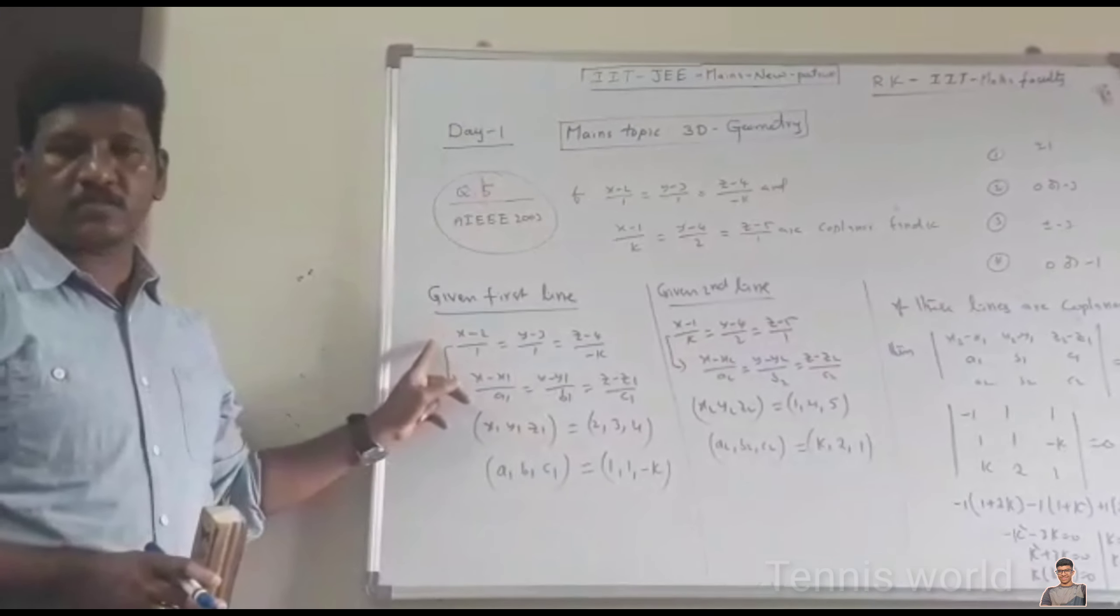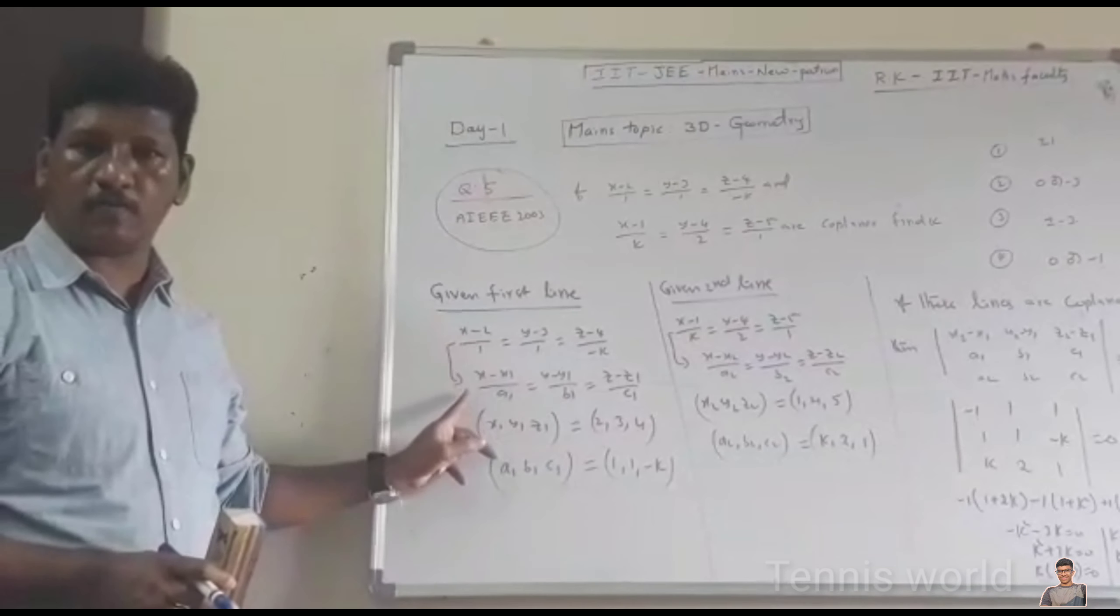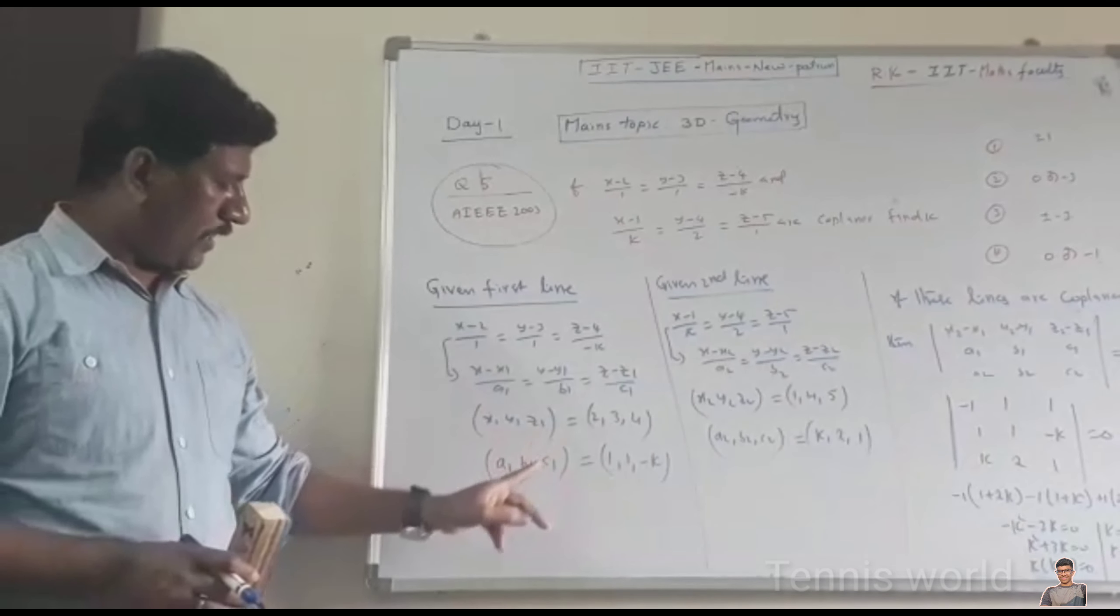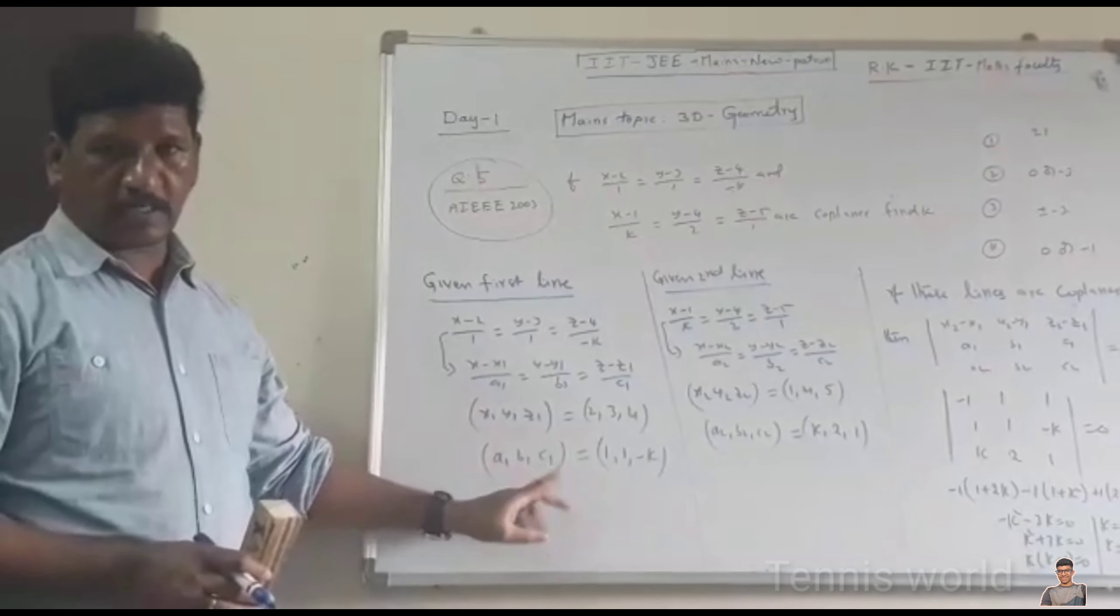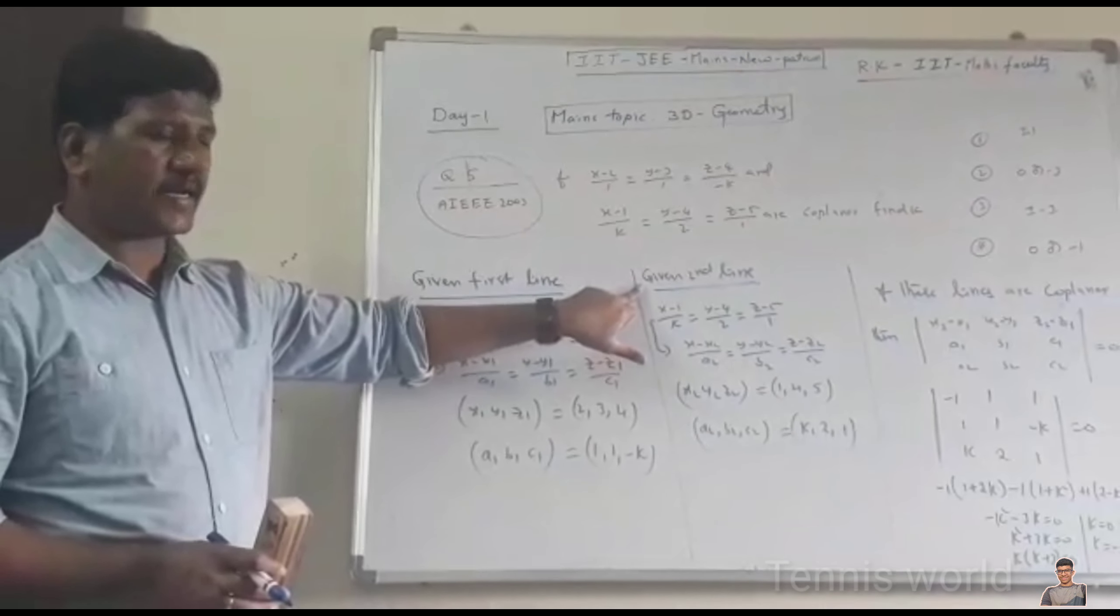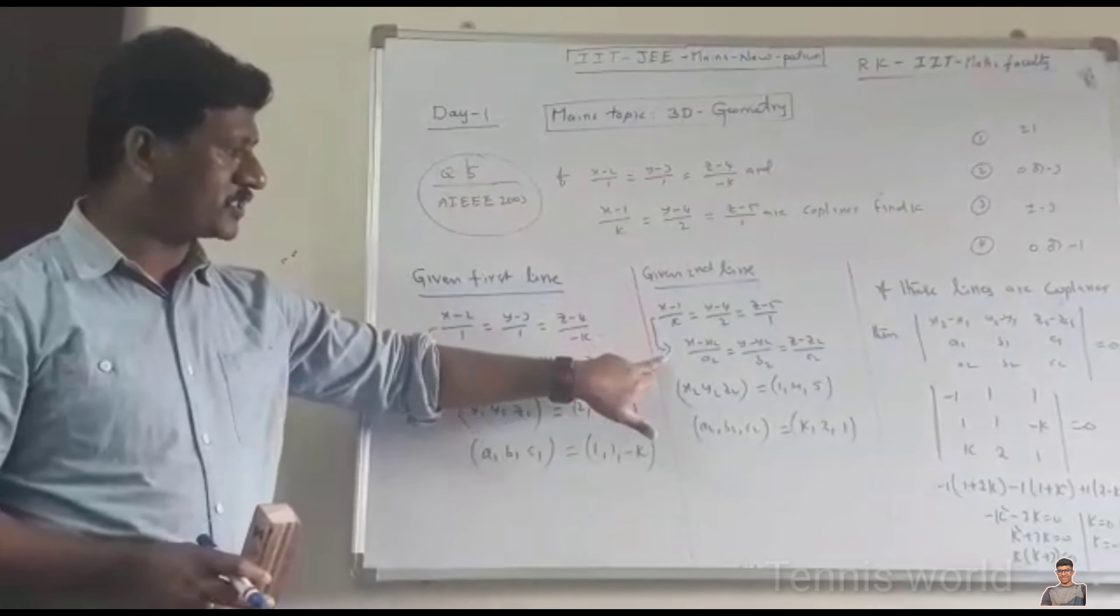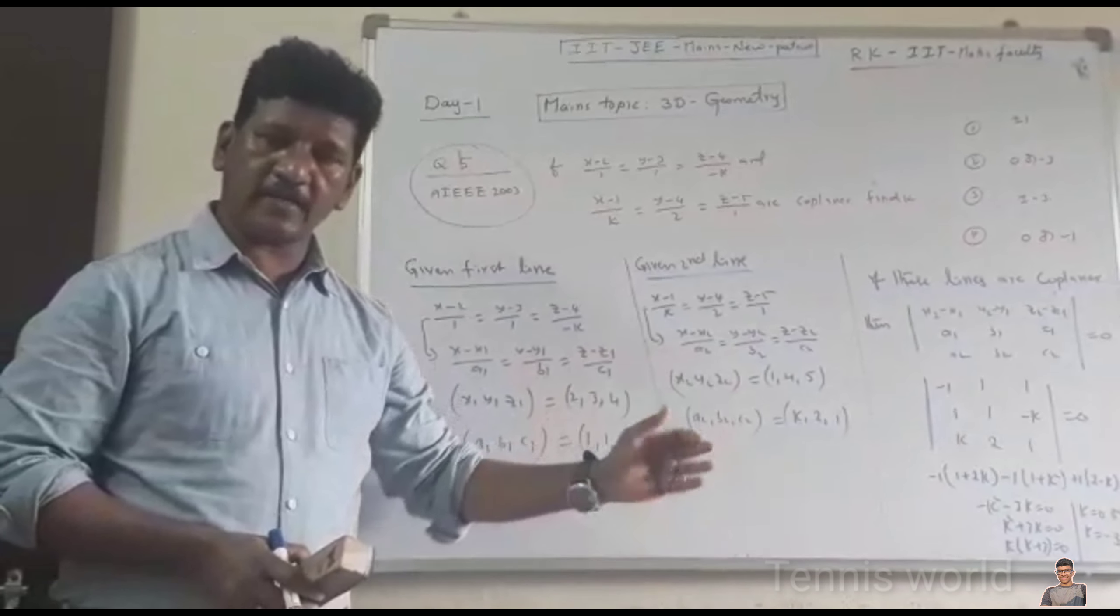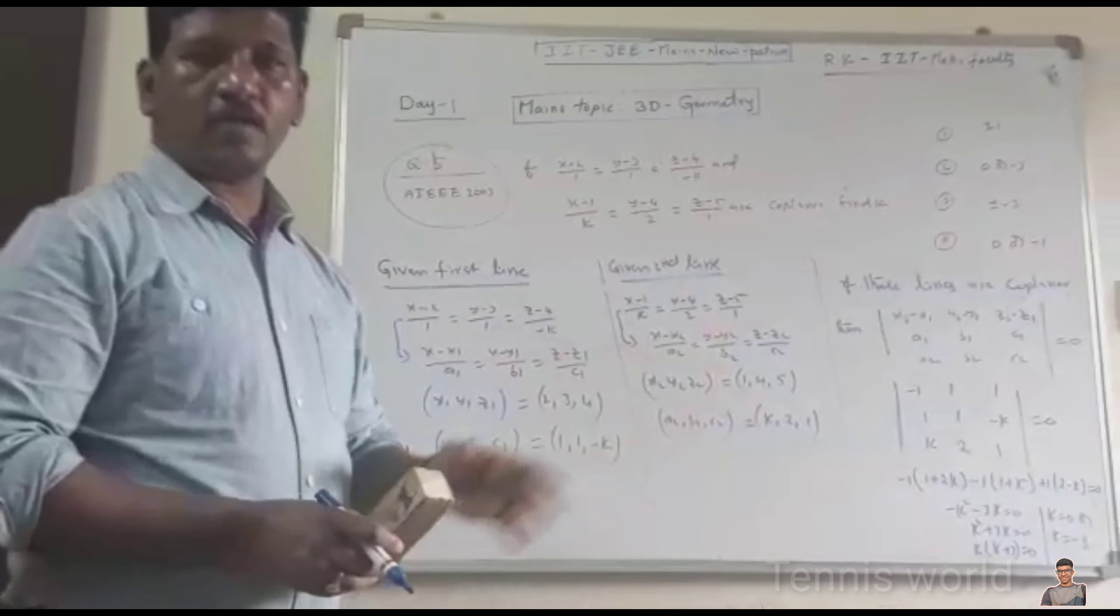The given first line is this. You compare this first line with this form. Then you will get X1, Y1, Z1 and you will get A1, B1, C1. And also, take the second line and you compare the second line with this form. So that you will get X2, Y2, Z2 and A2, B2, C2.